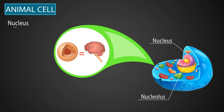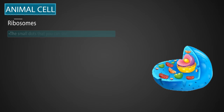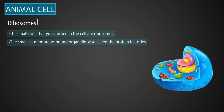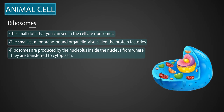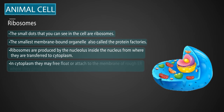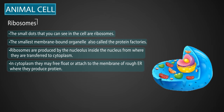Now let's learn about ribosomes. These small dots visible in the cell are called ribosomes. They are the smallest membrane-bound organelles and are called the protein factories. Ribosomes are produced by the nucleolus inside the nucleus, from where they are transferred into the cytoplasm. In the cytoplasm, they may free-flow or attach to the membrane of the rough endoplasmic reticulum, where they produce protein.